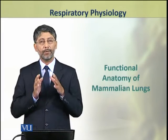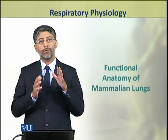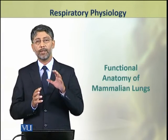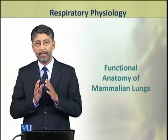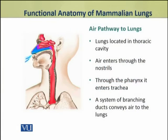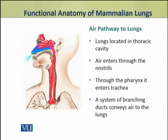Dear students, in this topic we shall discuss the functional anatomy of mammalian lungs. The mammalian lungs are located in the thoracic cavity or chest cavity. Air enters through the nostrils, then passing through the pharynx, it enters the trachea.